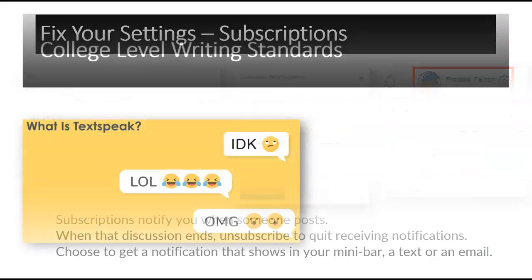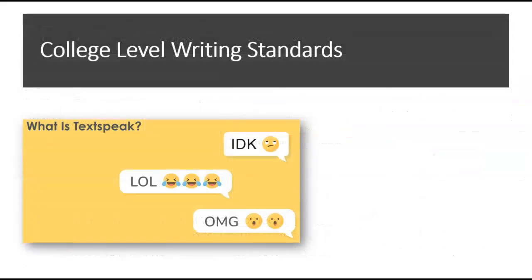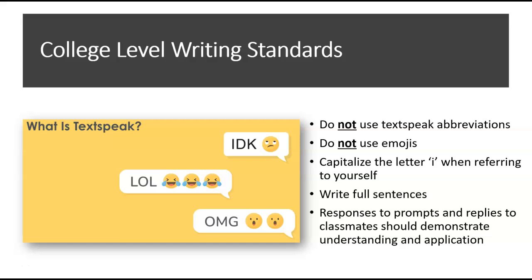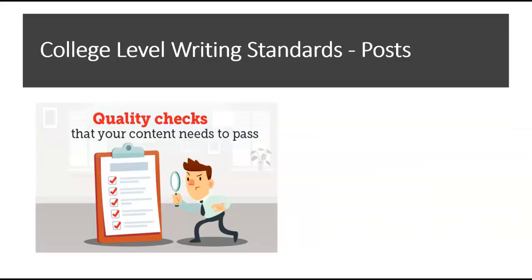College-level writing is expected for both posts and replies, including spelling, punctuation, capitalization, and grammar. Social networking and text messaging shortcuts — such as emojis and abbreviations — are not a part of college-level writing. Responses should be full sentences that include explanation of understanding and application of course concepts. Review the Writing Expectations page in content to learn more about these standards.